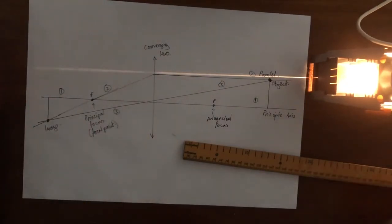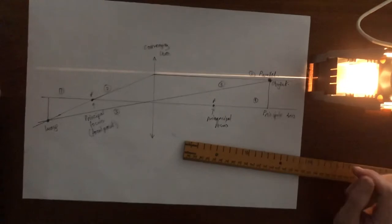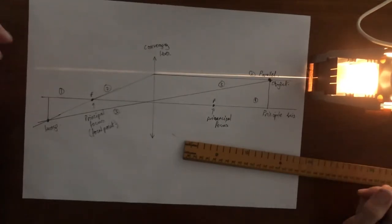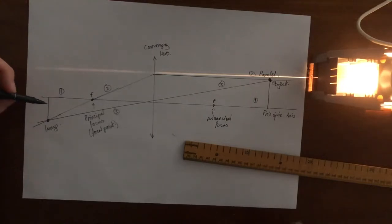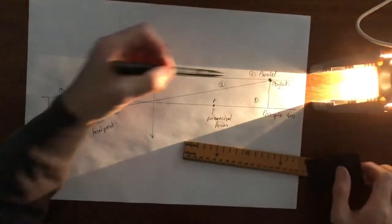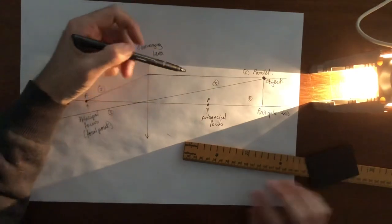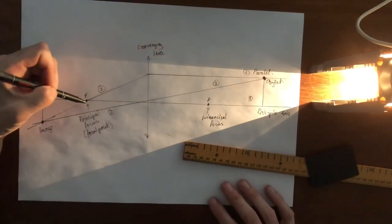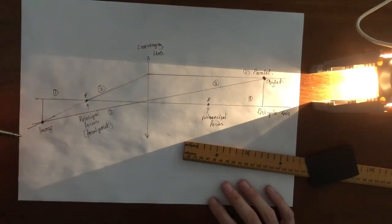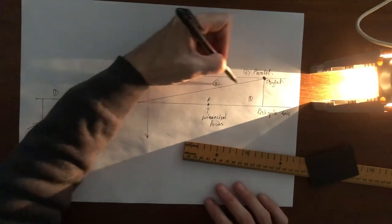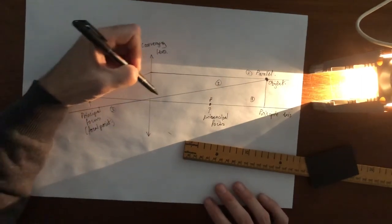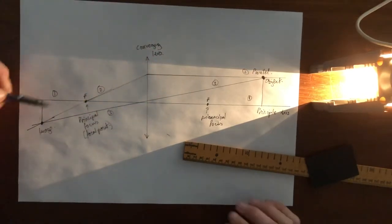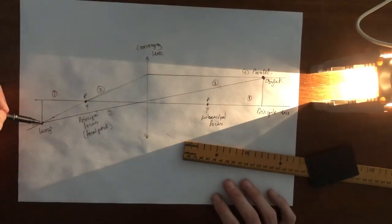If you've got some lenses at home, like a magnifying glass, you can try that. So to find the position of the image we use two specific rays: a ray that comes in parallel to the principal axis, which will then come down through the focal point and carry on; and a second ray that goes through the center of the lens, which comes out the other side undeviated. Where those two rays meet is the position of the image.